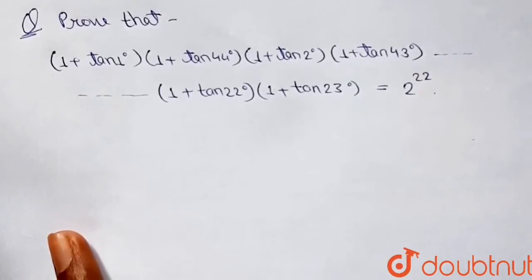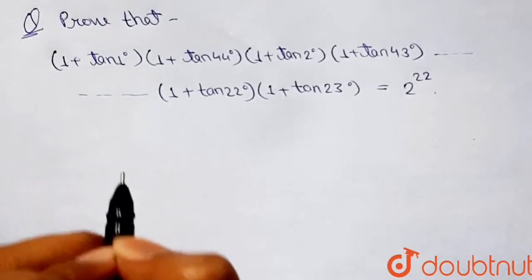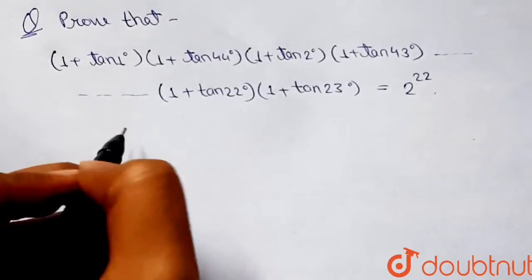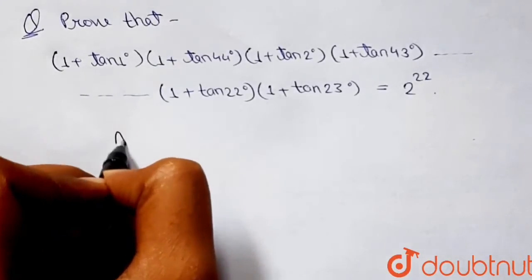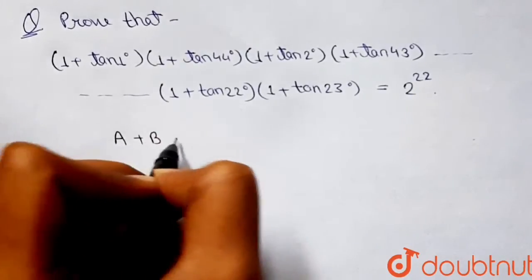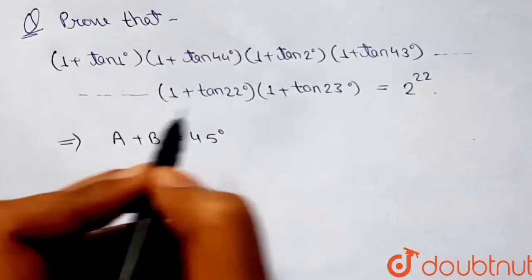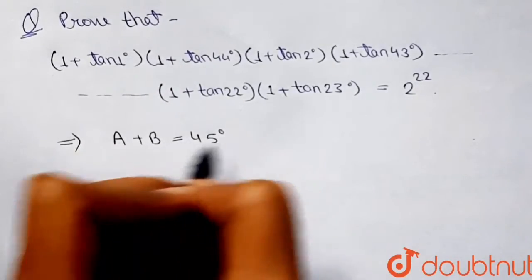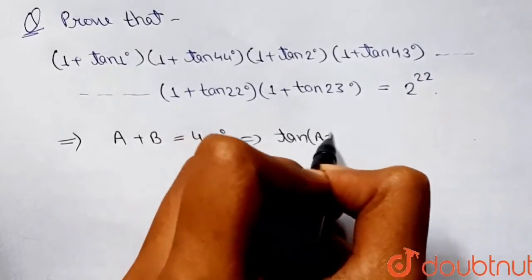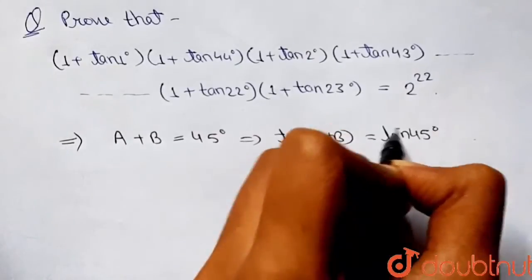Before moving towards the solution, let me show you something. Let's say we have two different angles and the sum of those angles is 45°. That is, let's say we have two angles a and b, and a + b = 45°. Taking tangent on both sides, tan(a + b) = tan 45°.